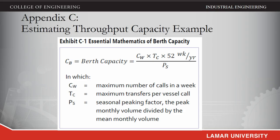Appendix C: Estimating Throughput Capacity Example. The models used to estimate port throughput capacity are either linear static models using spreadsheets, or more sophisticated dynamic simulation models that can show the impact of system dynamism and random events. Static models support equation-based analysis to estimate throughput capacity and equipment requirements as a function of the terminal layout, physical characteristics, and current anticipated operating practices.